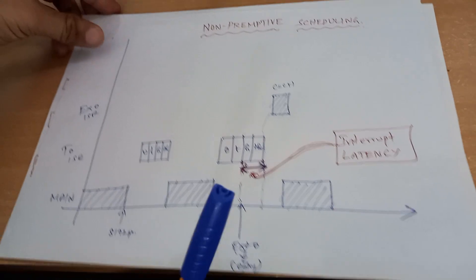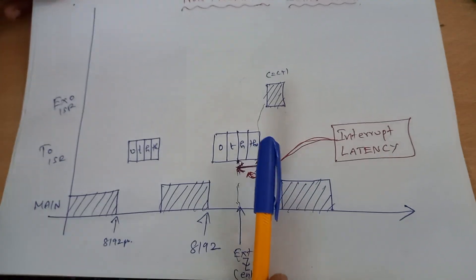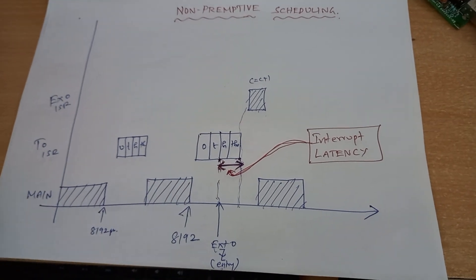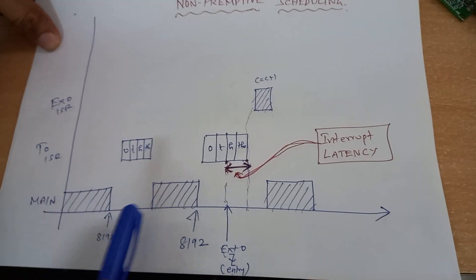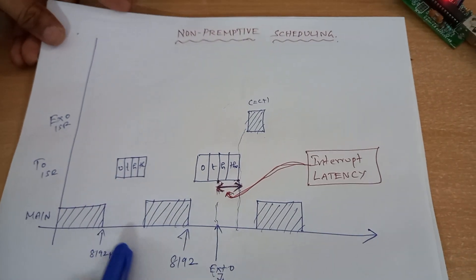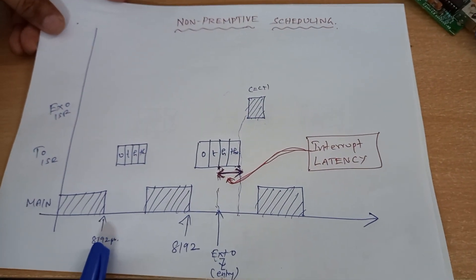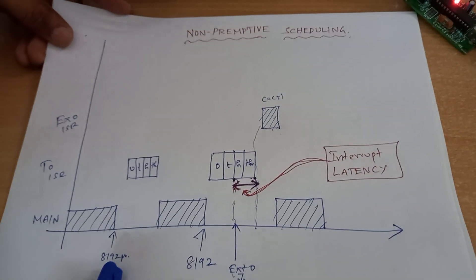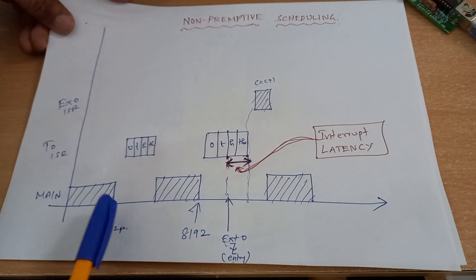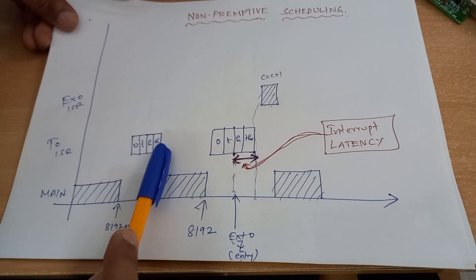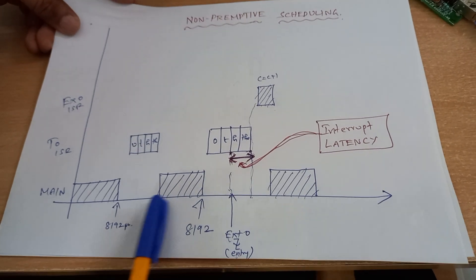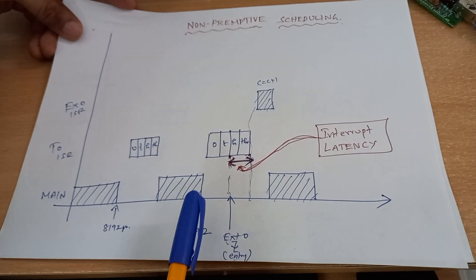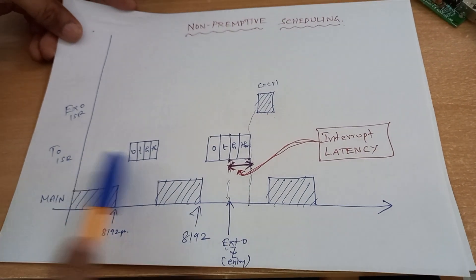Now, looking at the scheduling part — we are going to justify that AT51 is non-preemptive. What does non-preemptive mean? For example, the main routine is running. At every 8,092 microseconds, the timer is configured in 13-bit timer mode. Once in 8,092 microseconds, the timer will overflow, the display will get refreshed, and then it will return to the main routine. After another 8,092 microseconds, timer interrupt will be generated and it will go to the timer 0 ISR.